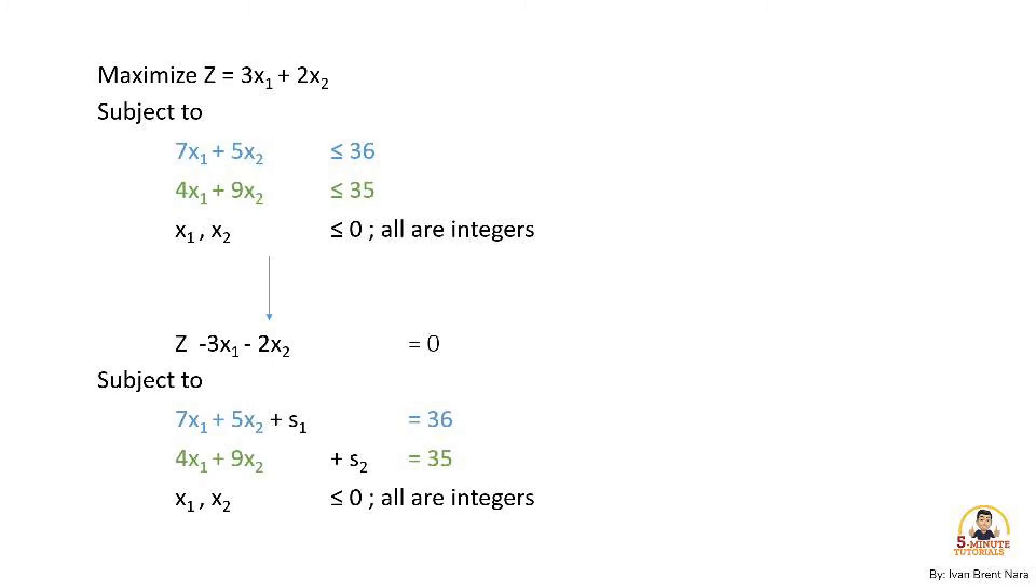First, 7x₁ + 5x₂ plus a positive slack variable s₁ to add a number to make the inequality less than or equal to equality. For the second constraint, 4x₁ + 9x₂, a slack variable s₂ equals 35 and all decision variables must be a non-negative integer.